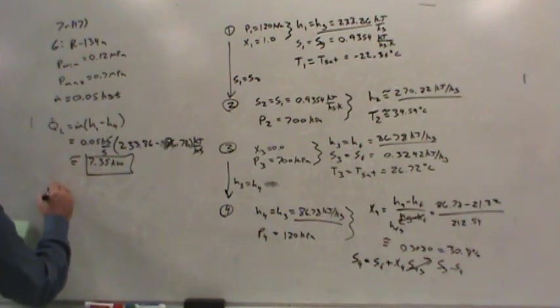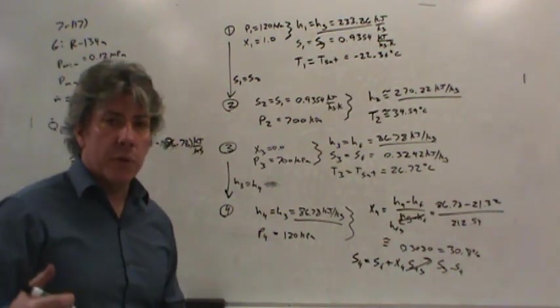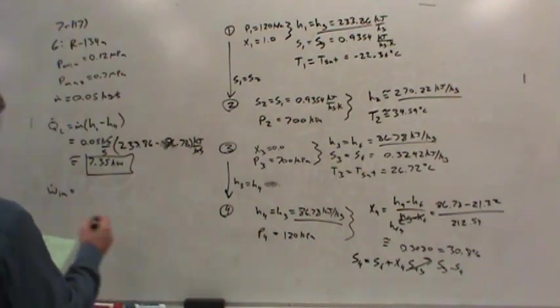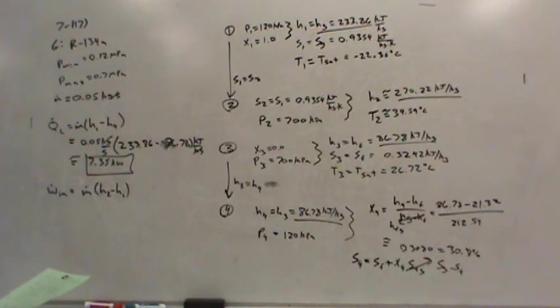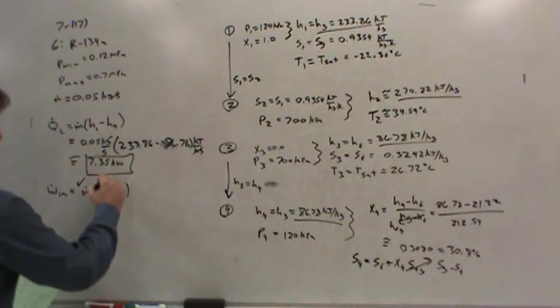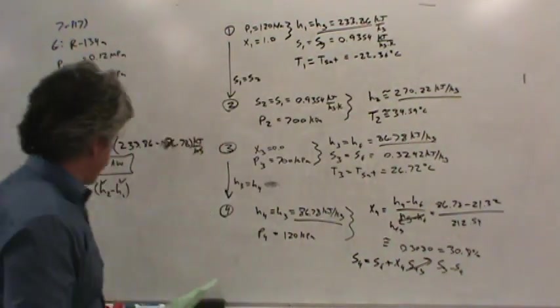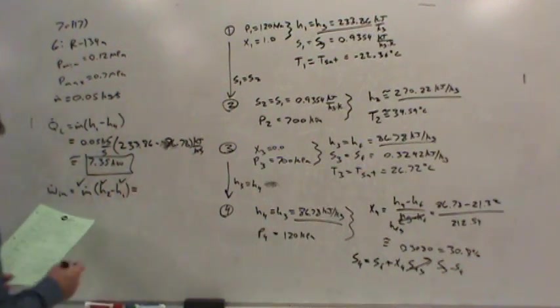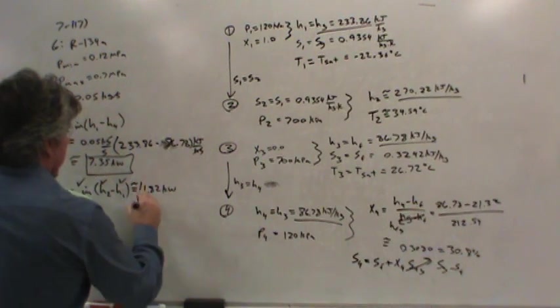They ask for the power input required. There's no turbine helping us out, only a compressor we have to drive. This is the mass flow rate times the specific work input to the compressor, H2 minus H1. The mass flow rate is 0.05, H2 and H1 we know. The power input requirement is about 1.82 kilowatts.